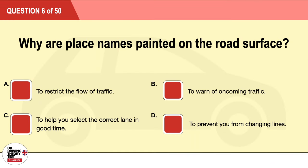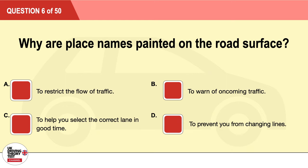Question 6: Why are place names painted on the road surface? A: To restrict the flow of traffic. B: To warn of oncoming traffic. C: To help you select the correct lane in good time. D: To prevent you from changing lanes. The correct answer is C: to help you select the correct lane in good time.